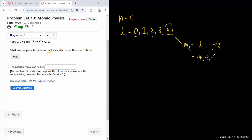minus 3, minus 2, minus 1, 0, 1, 2, 3, 4. So there are 9 possible states here.